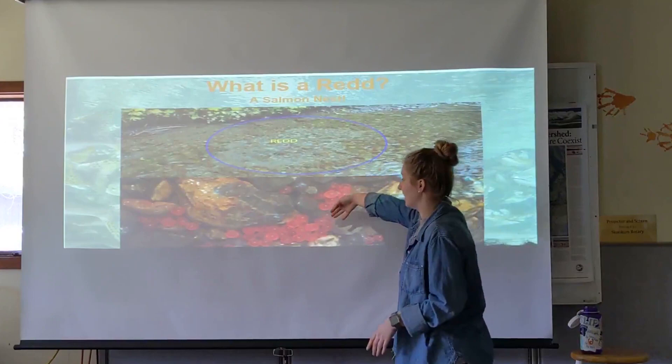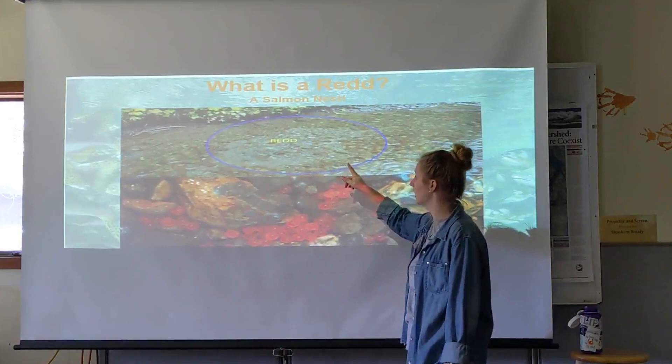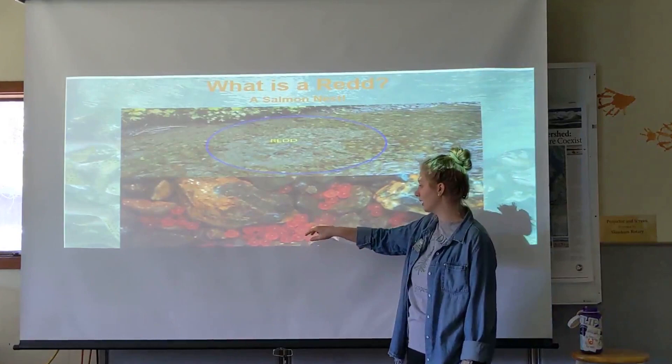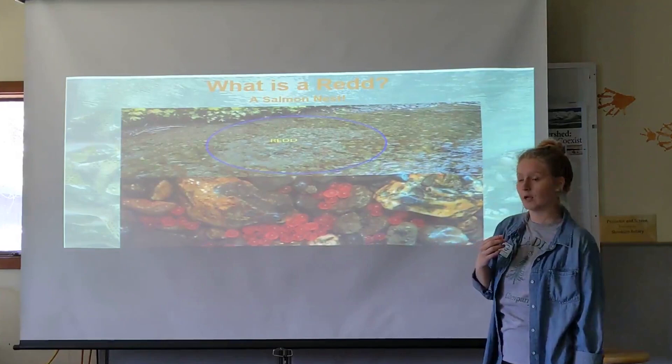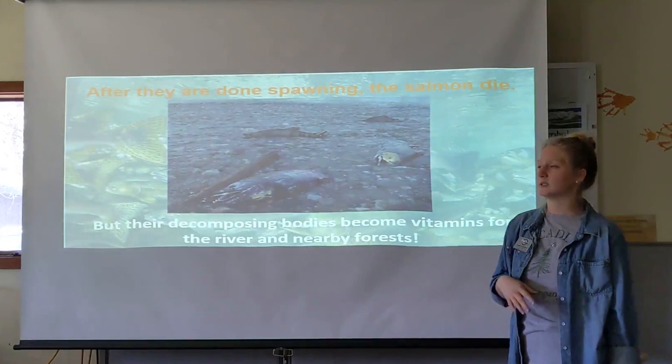A redd is a salmon nest. If you came past it on a regular day at a stream, it may look like a slight discoloration in the gravel, but if you look closer it will look clearer with vibrant reddish colors, and you can see the eggs are there. Once the spawners are done spawning and have laid their eggs, that is when the salmon's life cycle is complete and they die.